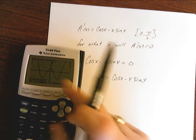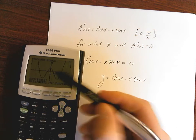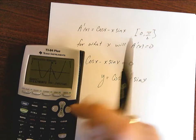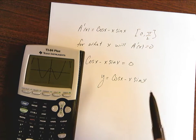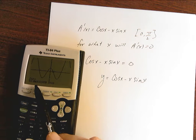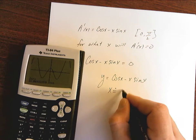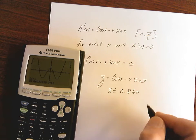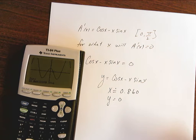It now wants a right bound so I have to go to the right hand side of the zero that I want, enter. Then it wants a guess so I'm going to put it close to it and give it a guess. It's going to give me an answer of x equals approximately 0.860 to make that equal to zero.